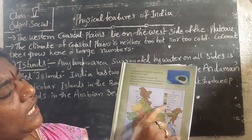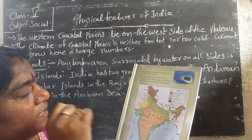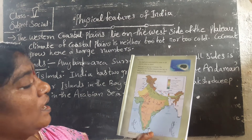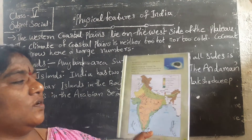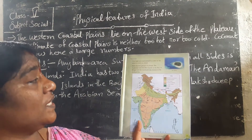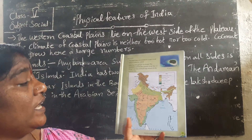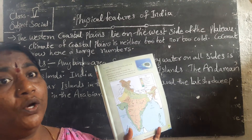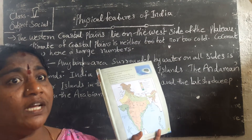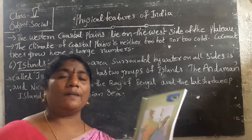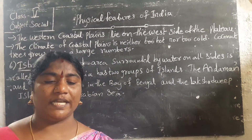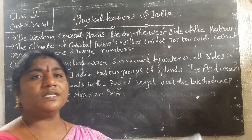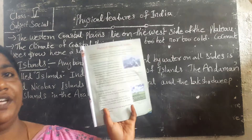Thick green represents the islands. These are shown in our textbook picture. And we have to complete our second lesson on the physical features of India.